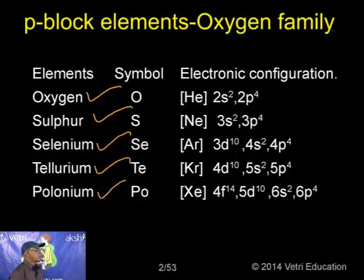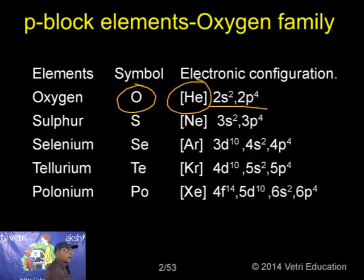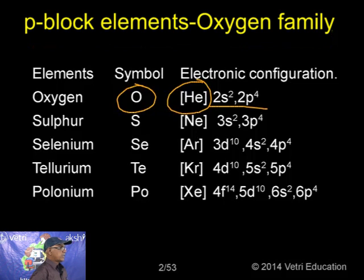Coming to the electronic configuration of Oxygen: the symbol is O, having the electronic configuration of Helium plus 2s² 2p⁴. So in all cases, the outermost electronic configuration is ns² np⁴. This is interesting information.